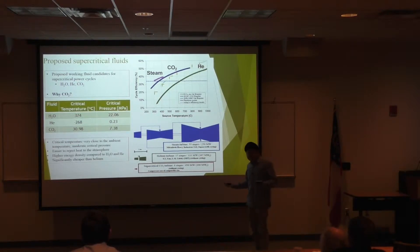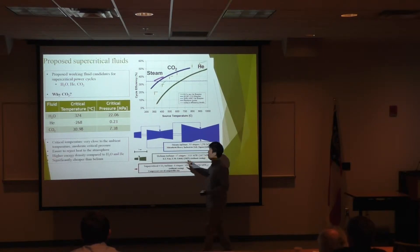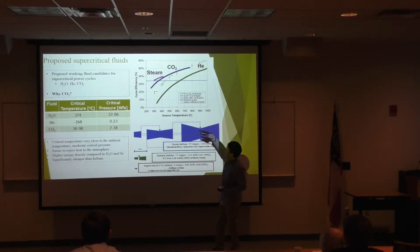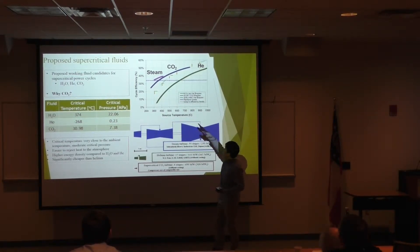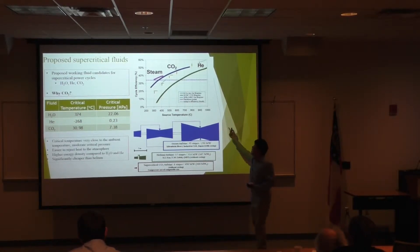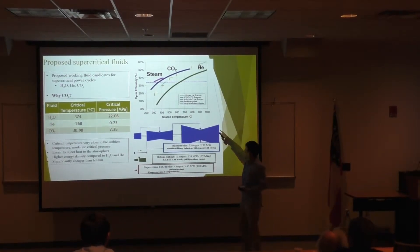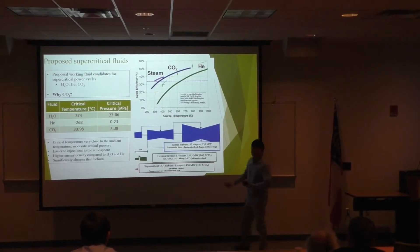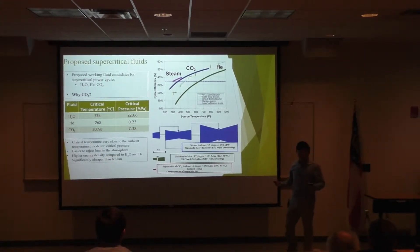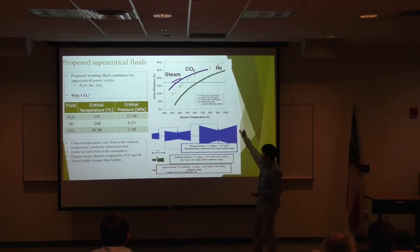Why supercritical CO2? There can be many supercritical fluids such as water, helium, and CO2. Depending on the temperature, the cycle efficiency can change. You can see around 50% cycle efficiency — steam cannot reach there, but CO2 or helium can. But for helium, if you want to go around 50% cycle efficiency, it needs to go to really high temperature, which is very challenging to achieve.